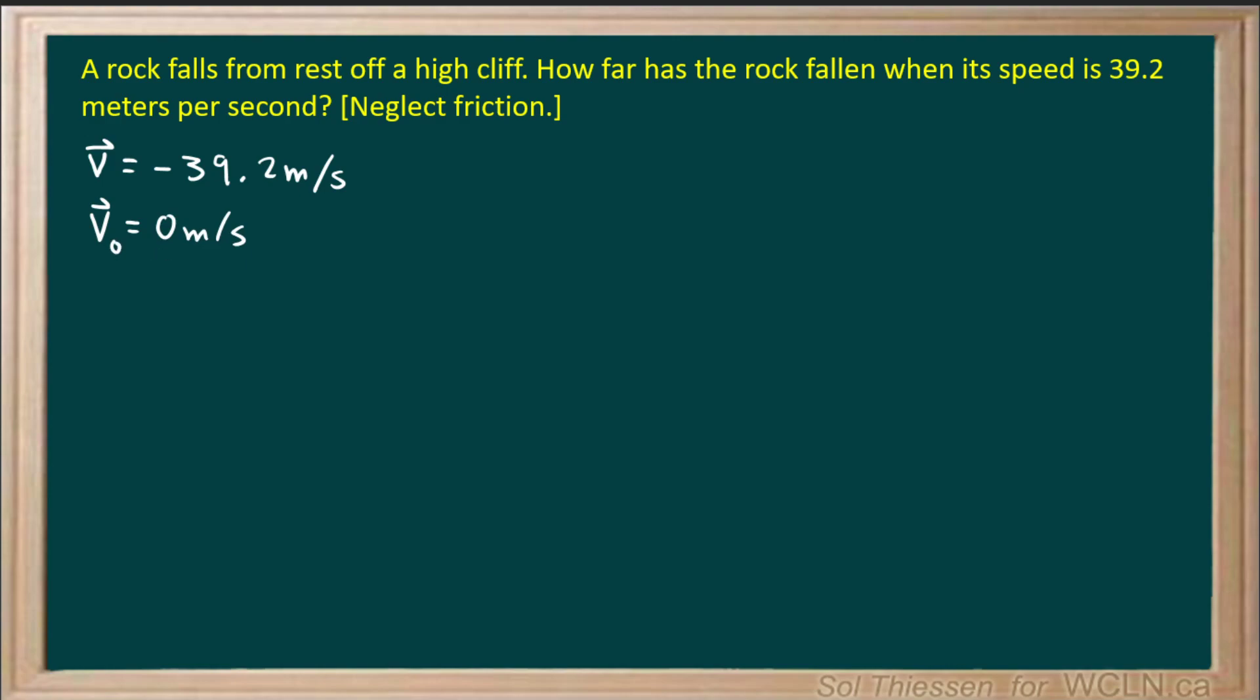We know the acceleration due to gravity on earth is in the downwards direction. It's roughly 9.81 meters per second squared. And we want to know how far the rock has fallen when it gets to this final speed, so we want to know the displacement.